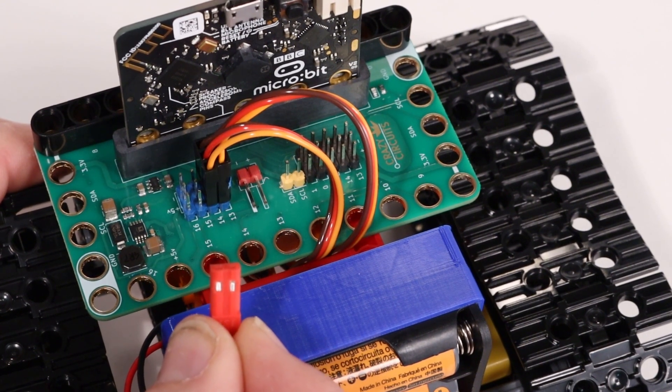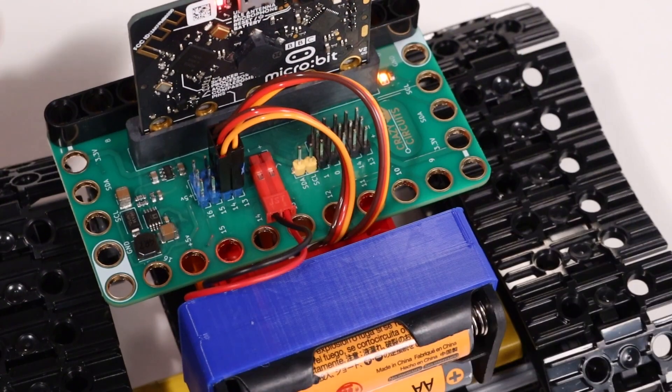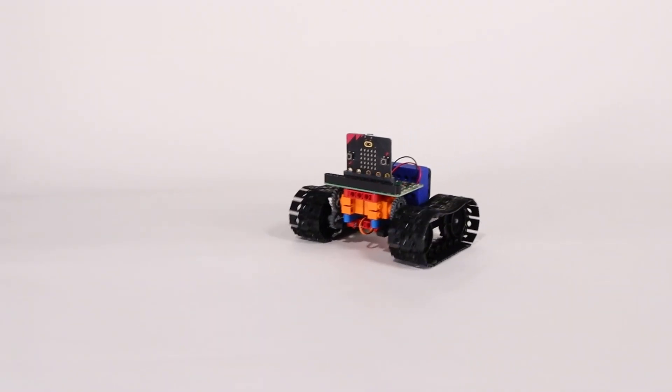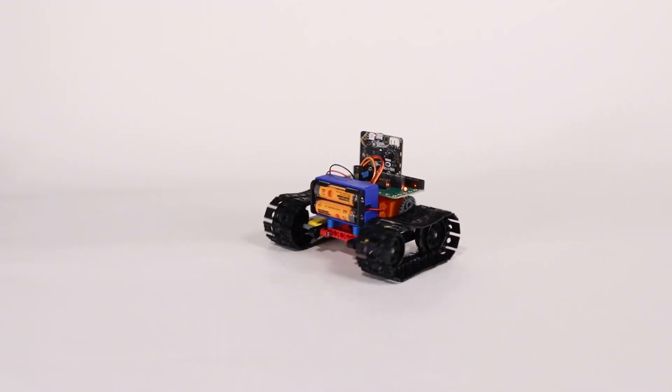Then connect power from the battery pack to the bit board. Make sure to check polarity that the red wire goes to the plus symbol on the board. The tank will move forward and showcase its zero-turn tank steering.